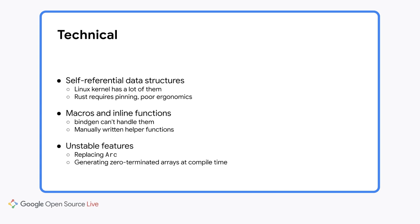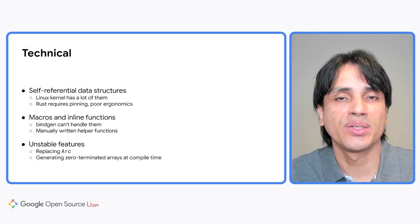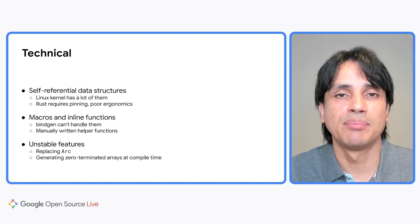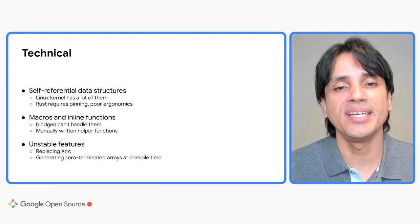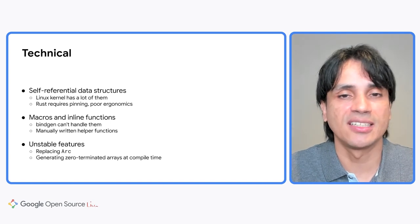The next big challenge is that Bindgen doesn't handle non-trivial macros and inline functions, and we have lots of those in the kernel, mostly for performance. Before LTO existed, lots of functions were declared in header files as inline functions. Bindgen doesn't handle those functions, which means every time we want to use one of those, we have to write manual bindings ourselves, which gets in the way — but it's not a showstopper.